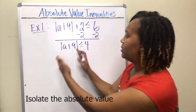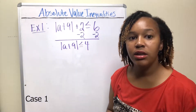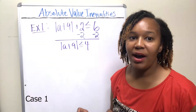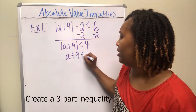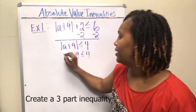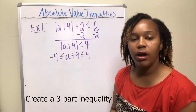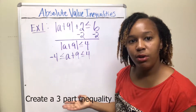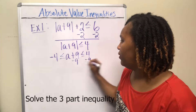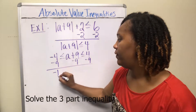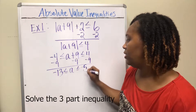Now the absolute value is less than a number, so this is case one. Create a three-part inequality by dropping the absolute value bars, placing the same inequality on the left, and the opposite of 4 on the other side. Then solve by subtracting 9 everywhere, giving you -13 ≤ a ≤ -5.